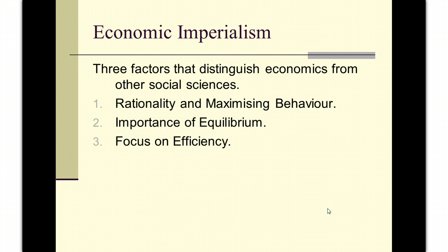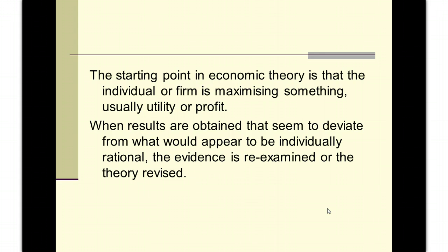The three factors that distinguish economics from the other social sciences are something we've looked at before. The first distinguishing feature is the assumption of rationality, which simply entails some form of maximising behaviour — that you're maximising some magnitude. Then we look at the importance of equilibrium, and finally economics' focus on efficiency. Lazear laid out in his article on economic imperialism what he felt the three distinguishing features were: rationality, equilibrium, efficiency.